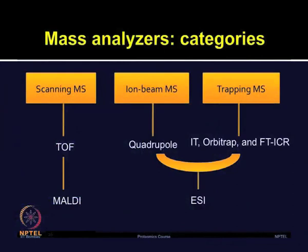Mass analyzers can be categorized broadly into scanning MS, ion beam MS, and trapping MS. Scanning MS is more commonly used with the TOF, which is further coupled with multiple ionization sources. The ion beam MS is commonly used for quadrupoles, whereas trapping MS is used for ion traps, orbit traps, and FTICR. All these can be coupled with electrospray ionization (ESI).